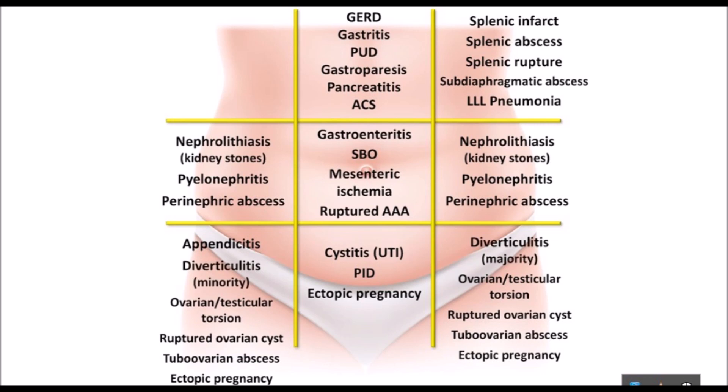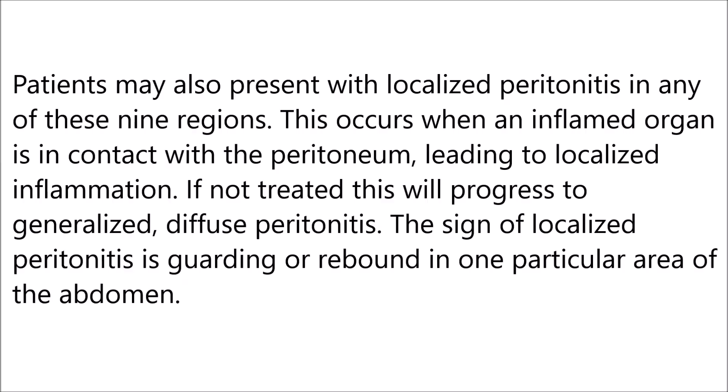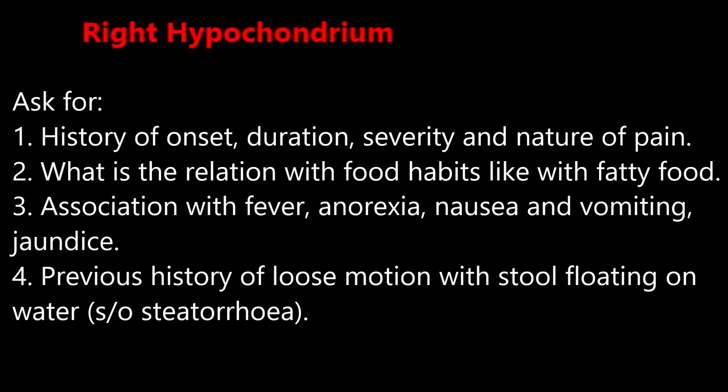A patient may also present with localized peritonitis in any of these nine regions. This occurs when an inflamed organ is in contact with the peritoneum, leading to localized inflammation. If not treated, this will progress to generalized diffuse peritonitis. The sign of localized peritonitis is guarding or rebound tenderness in one particular area of the abdomen.